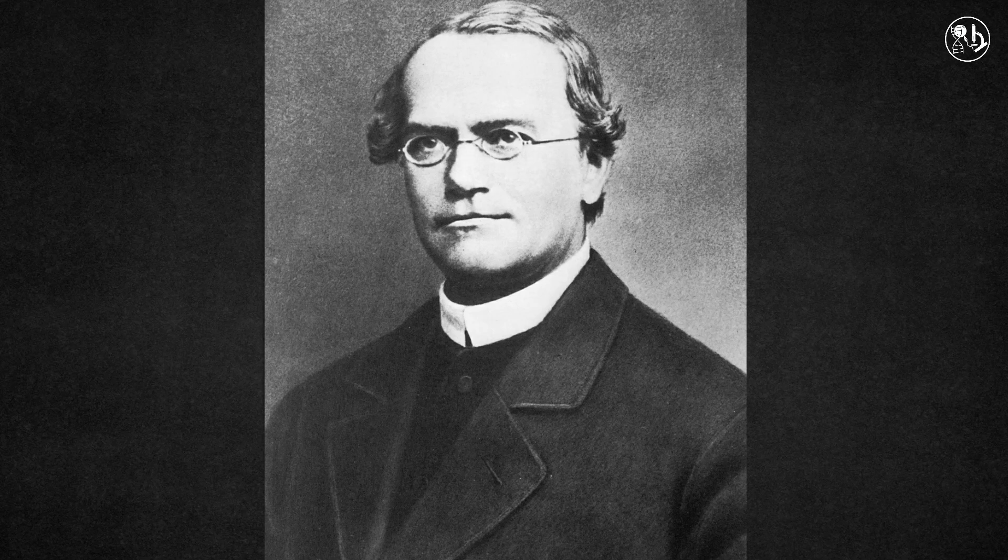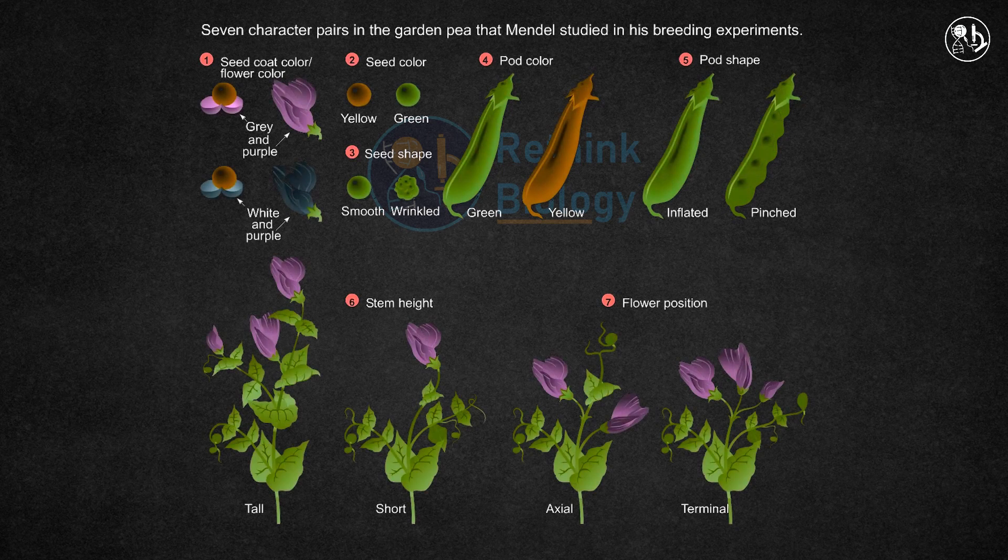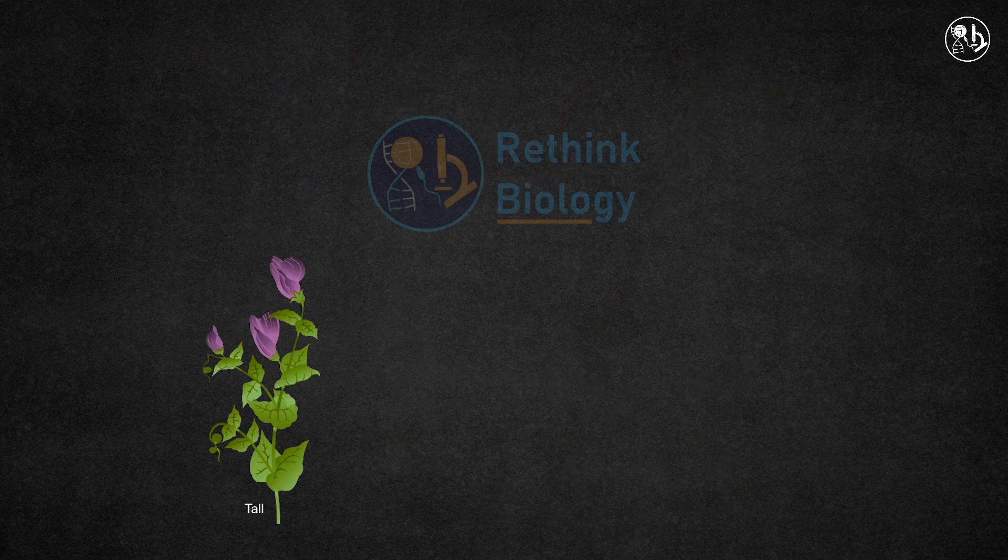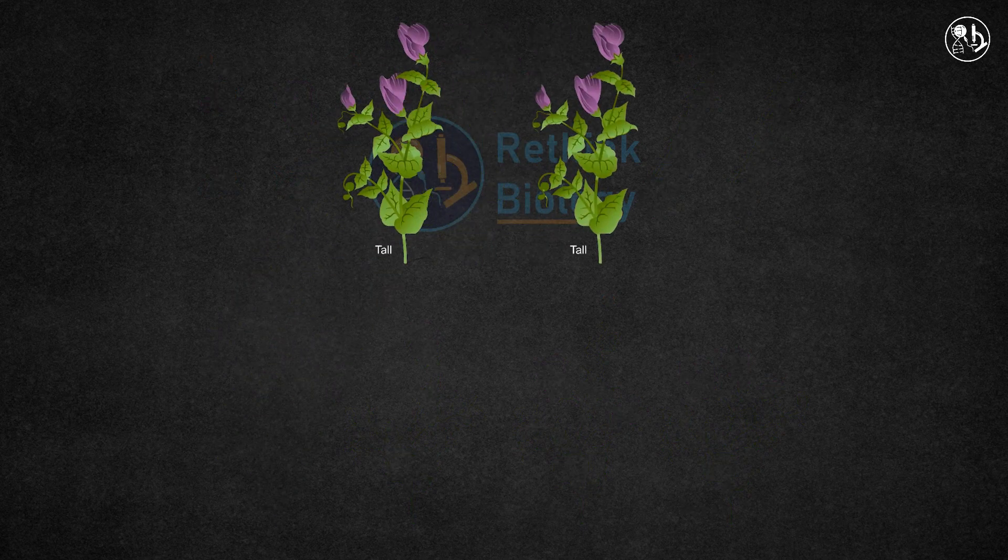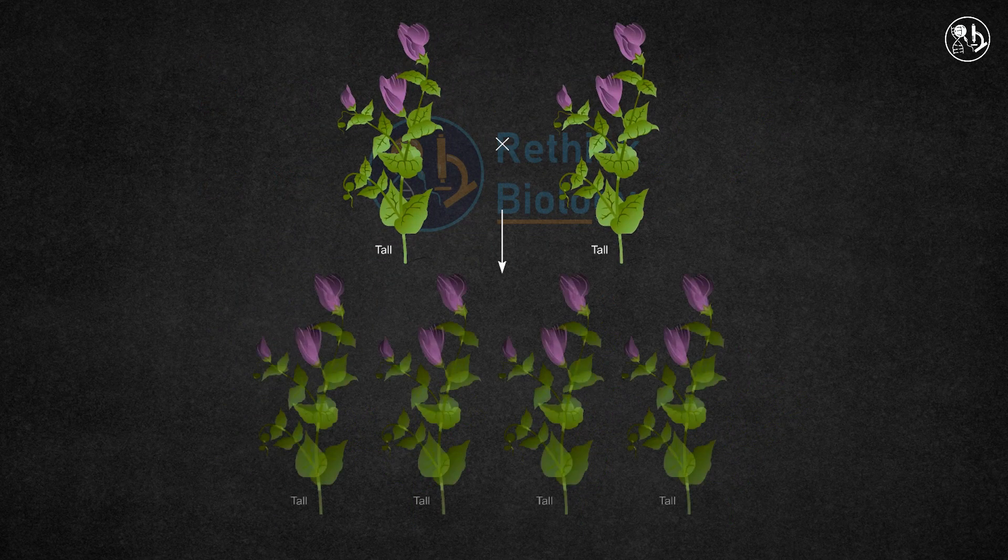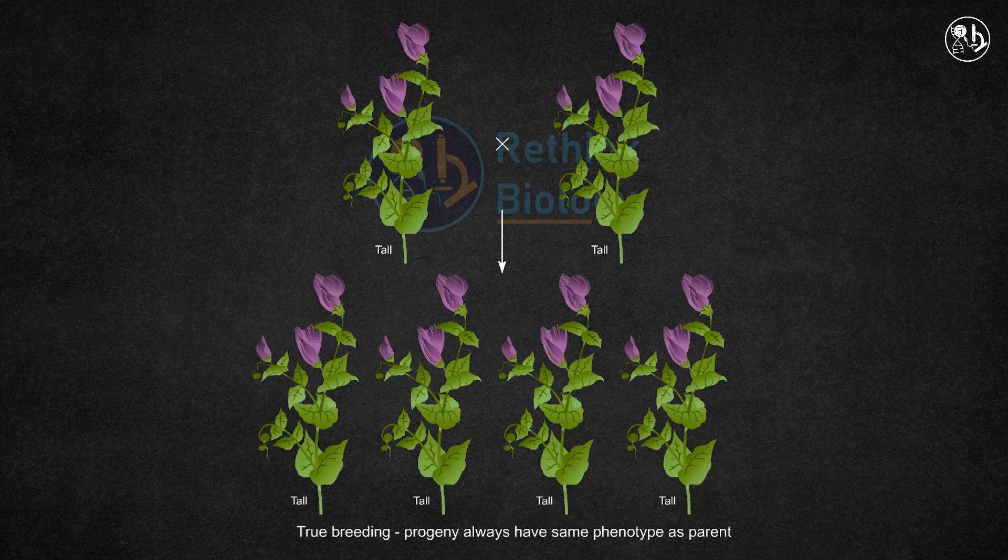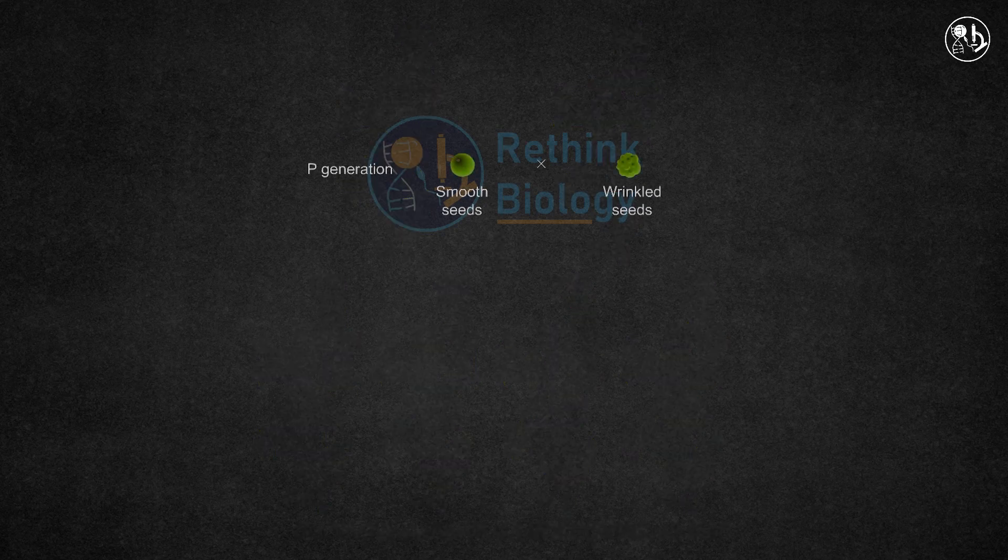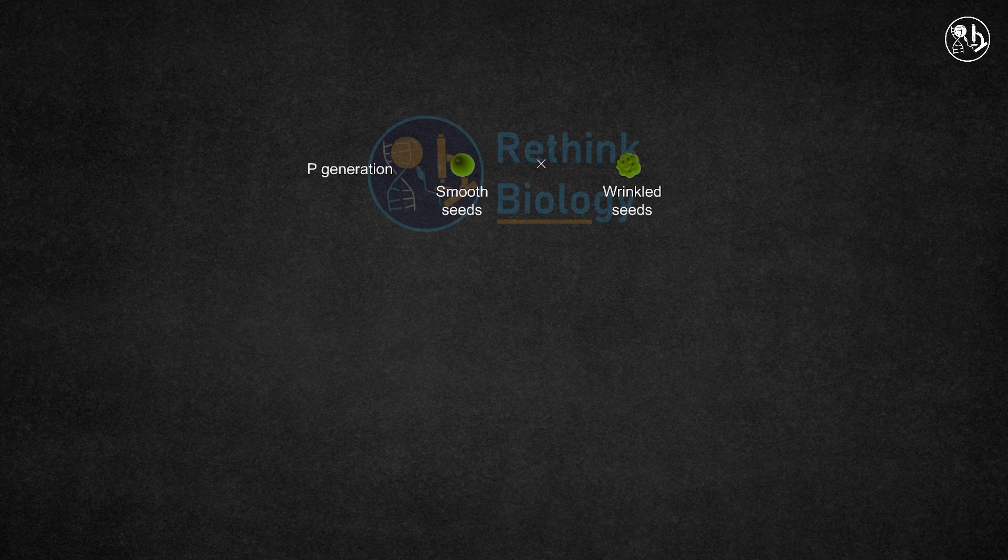Mendel is known as the founder of classical genetics and studied heredity by examining inheritance patterns in pea plants. Mendel conducted experiments using true breeding plants that always produced the same traits when self-fertilized. He crossed true breeding plants that differed in a single trait like seed texture and observed the results.